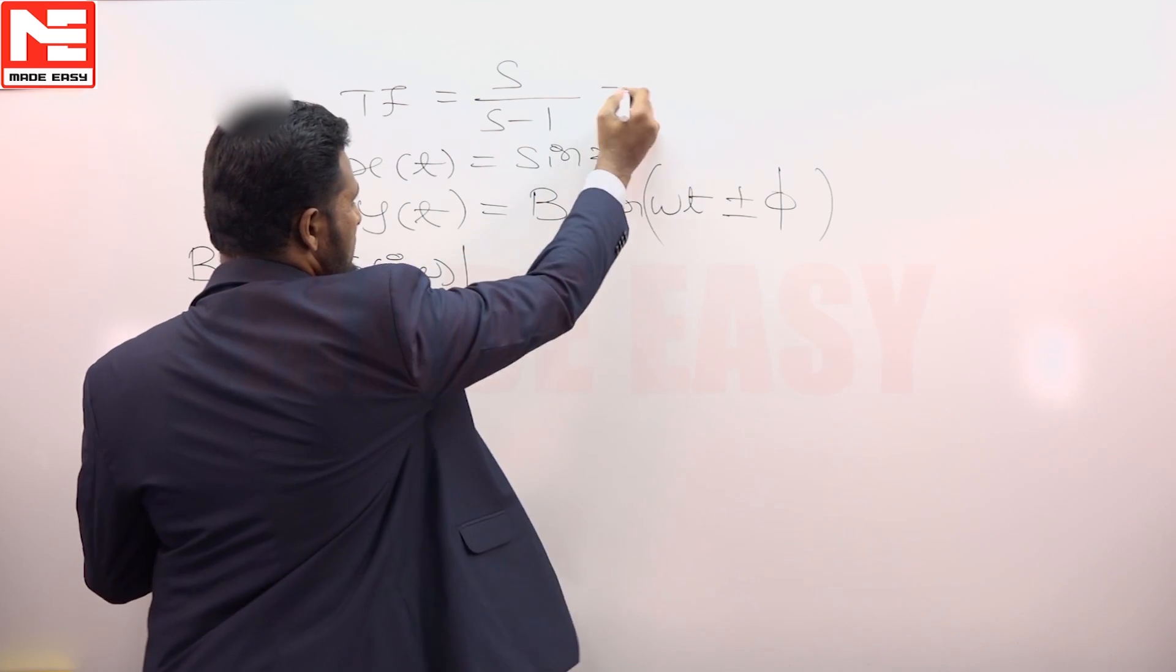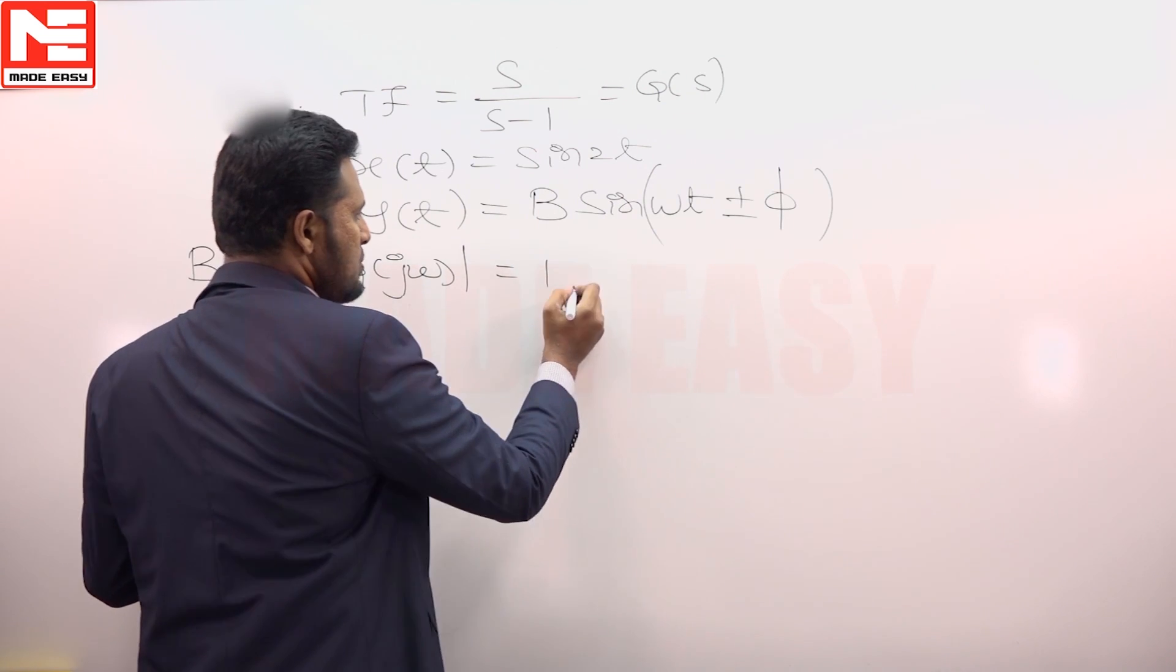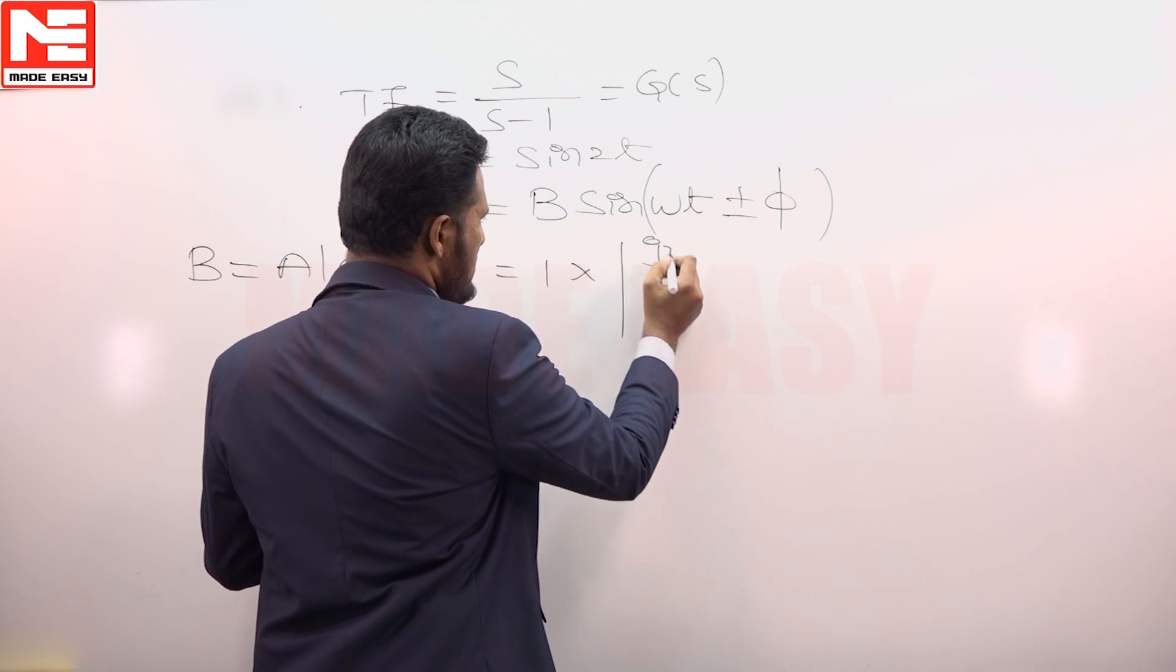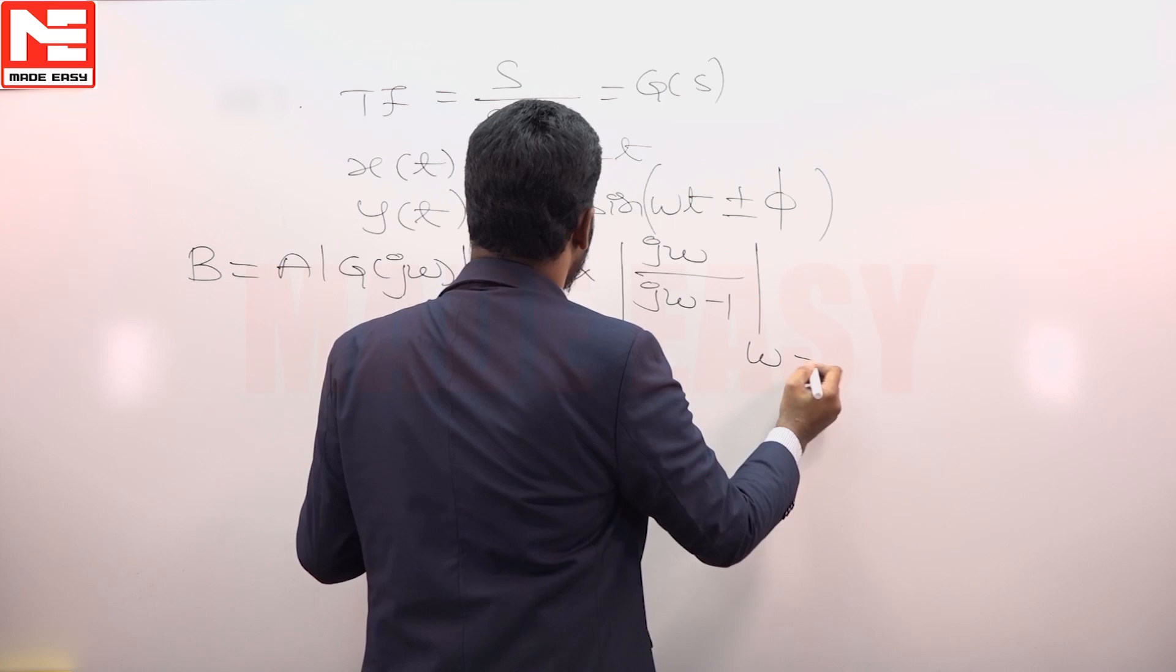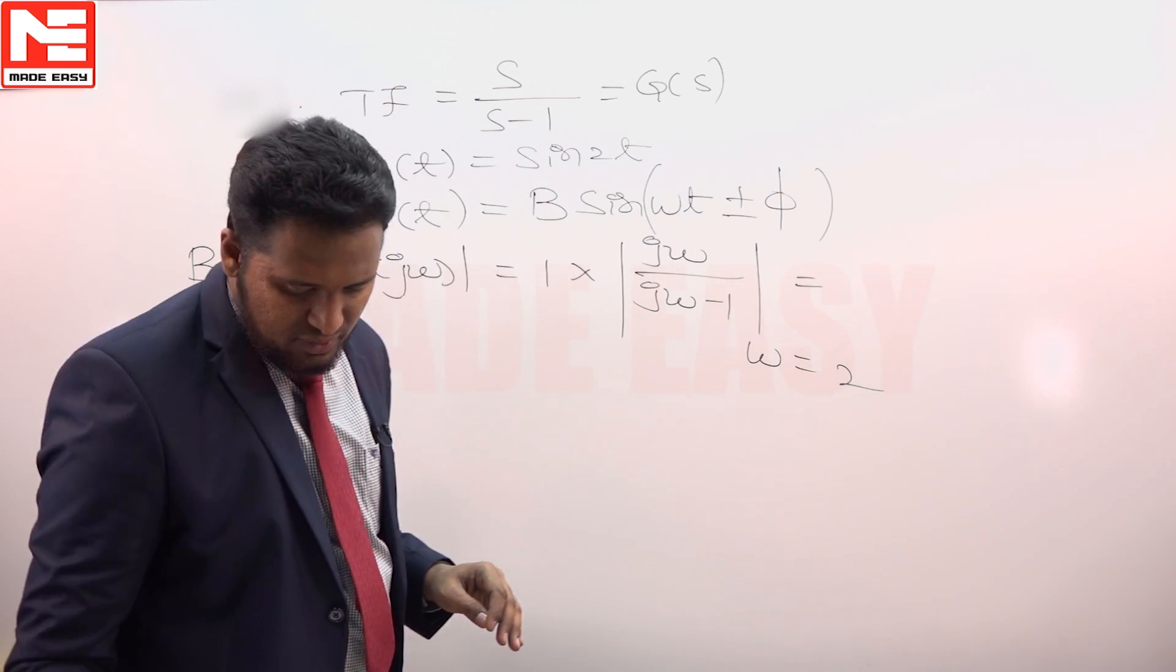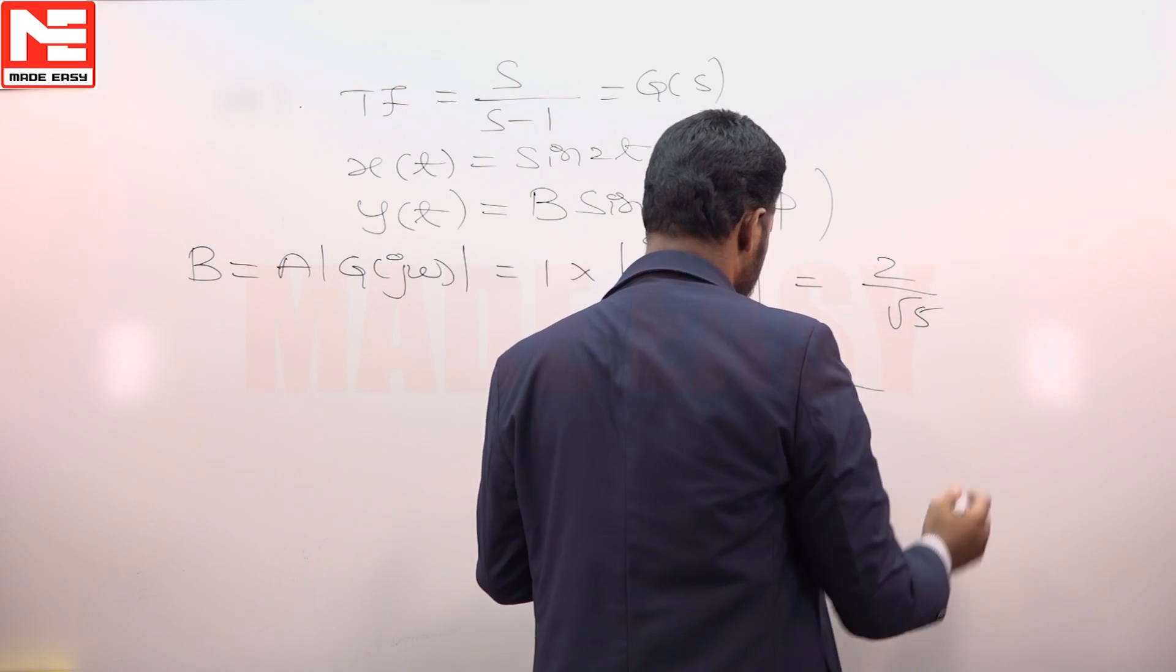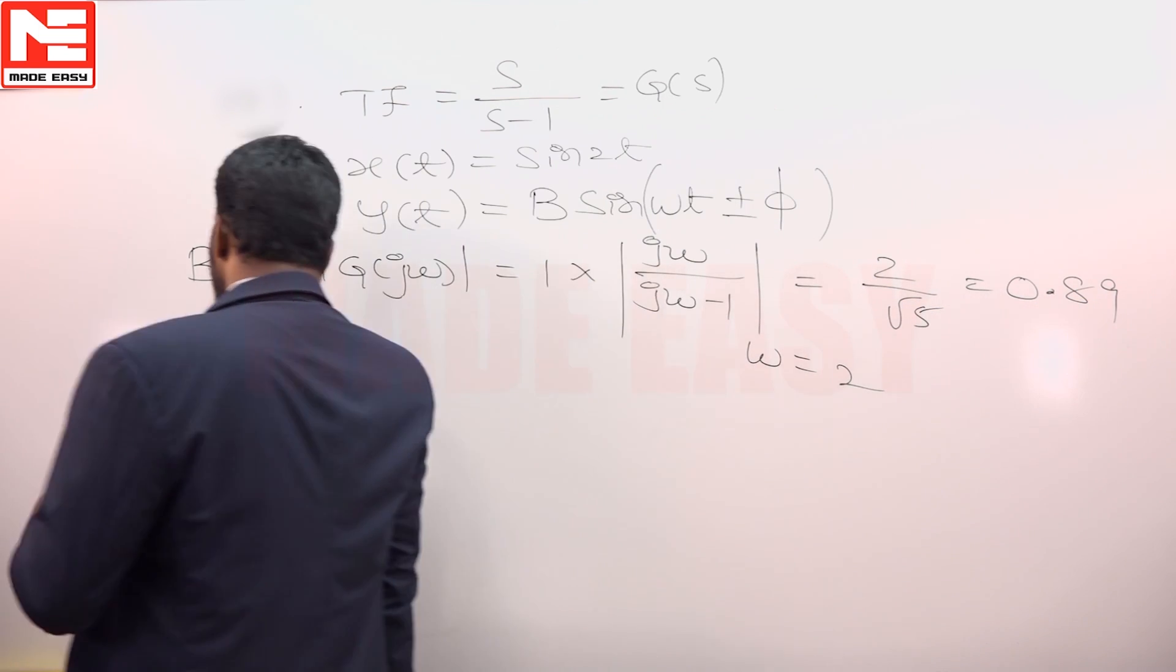Consider the transfer function as G(s), where A is the unit input amplitude. So this is jω/(jω-1) for ω equals 2. This becomes 2/√5, that is 0.89.